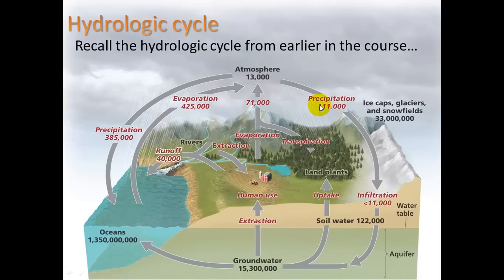We have precipitation in the form of rain and snow. When the precipitation comes down, it lands and can do what we call runoff, where it travels along the surface, eventually back to the ocean via streams and rivers. Or it can go into the ground, which we call infiltration — that's a word you'll need to know. It then becomes what we call groundwater, stored down in the aquifer.